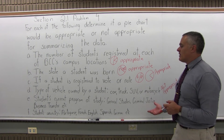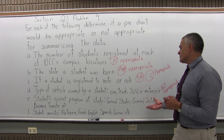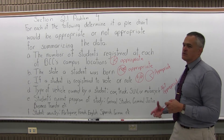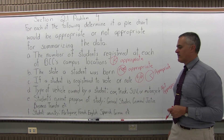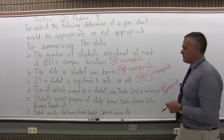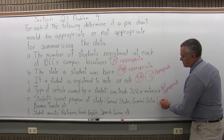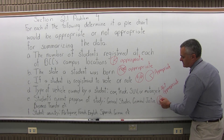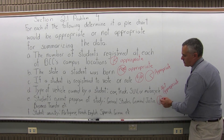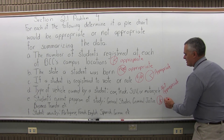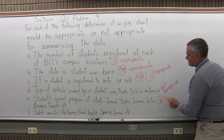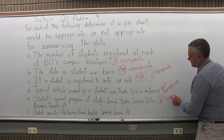Part E: program of study for a student, whether it's general studies, criminal justice, business transfer, or whatever other program we have — that would make a good pie chart. I think I've even seen those pie charts. A big chunk of our students are general studies, the next biggest is criminal justice, then business transfer, and then it splits up into smaller ones like engineering and so on. So program of study would be appropriate.